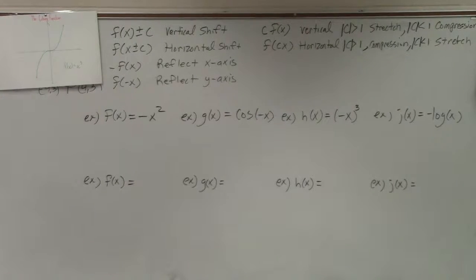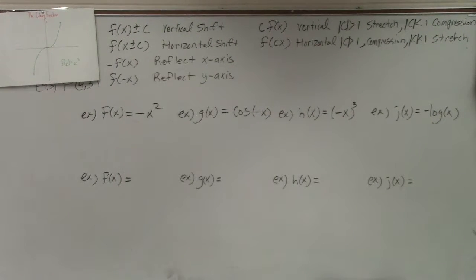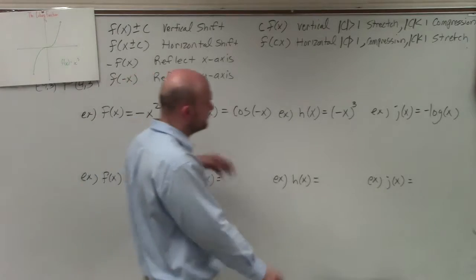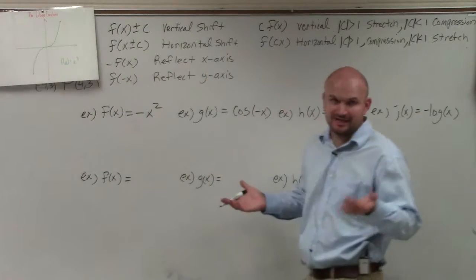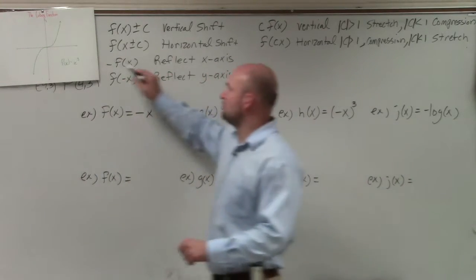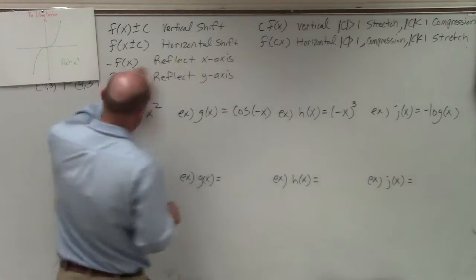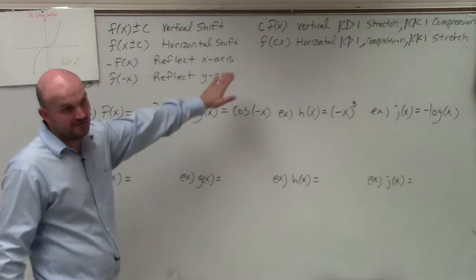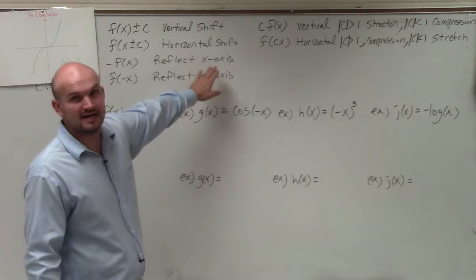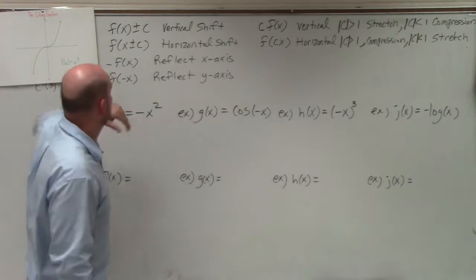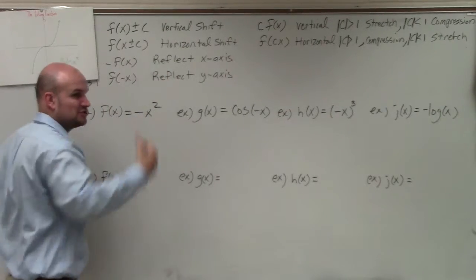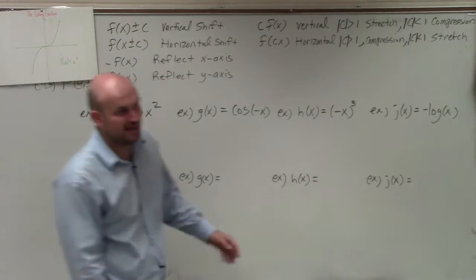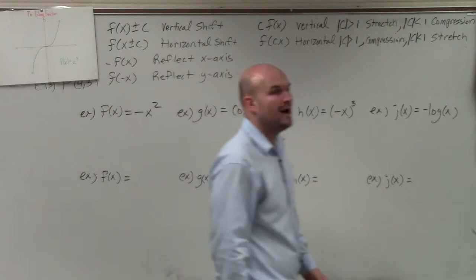I'm just going to do four examples here. What we're identifying is reflections. So if you multiply by negative outside of a function, you're reflecting over the x-axis. If you multiply by negative inside the function, you're reflecting over the y-axis.